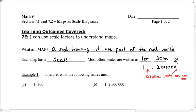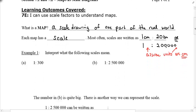So in example 1A, I just want you to interpret what these scales mean. So if you see 1 colon 300, what does that mean? That just means that 1 centimeter on the map represents 300 centimeters in real life.